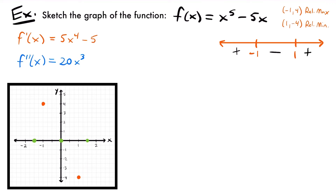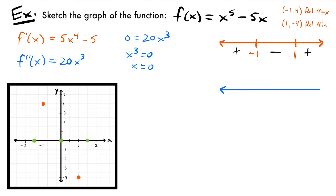Inflection points are where the concavity of your function is changing. Setting zero equals 20x cubed, dividing both sides by 20 gives x cubed equals 0, so x equals 0. Our function has the potential to change its concavity around x equals 0. To confirm it's an inflection point, we test the intervals around that point. I'll draw a number line for the second derivative — labeled f double prime of x — with the potential inflection point at x equals 0, giving two intervals: negative infinity to 0, and 0 to positive infinity.